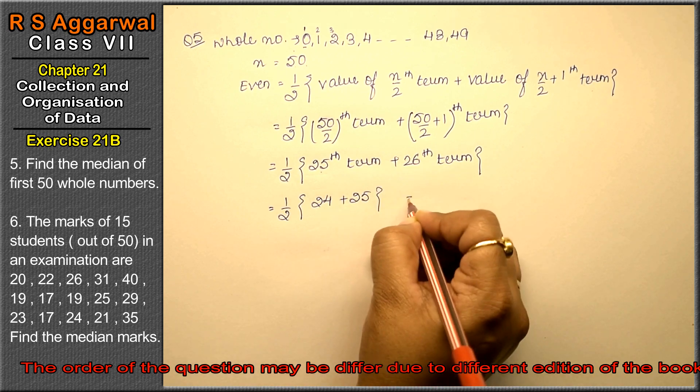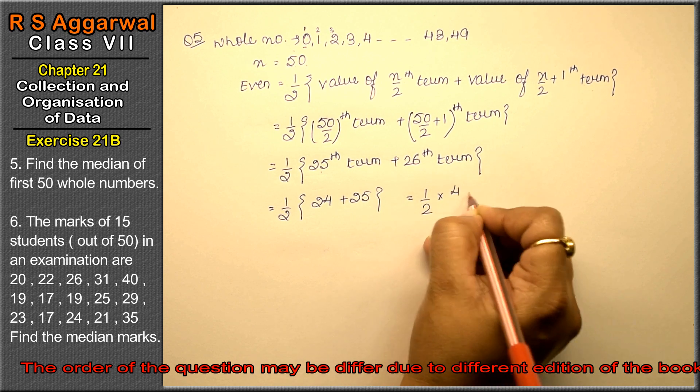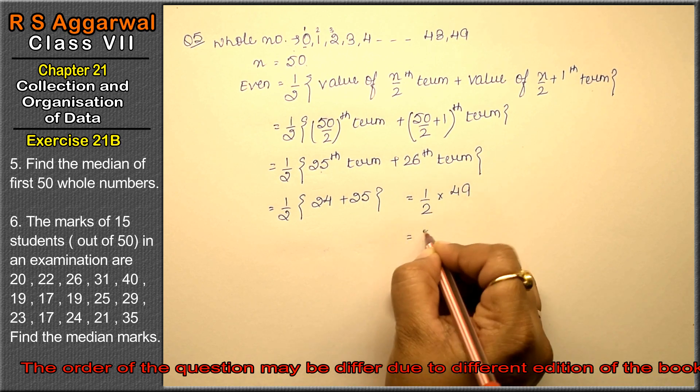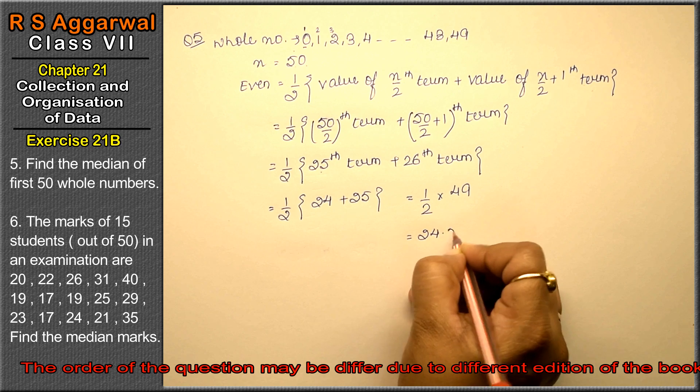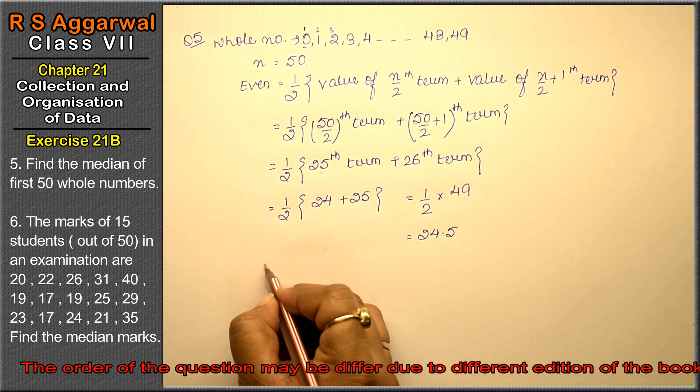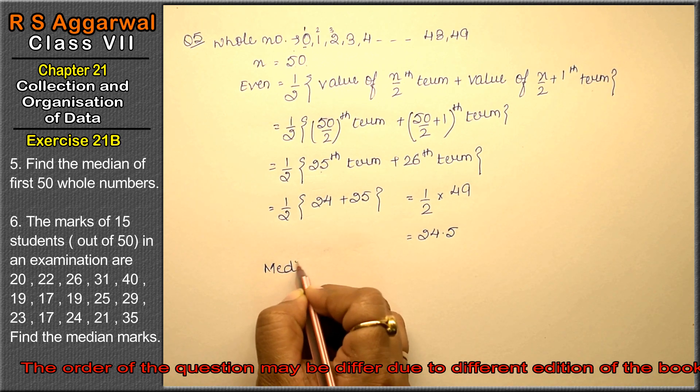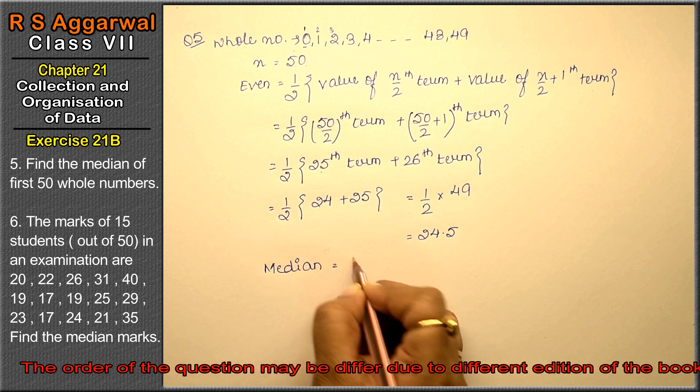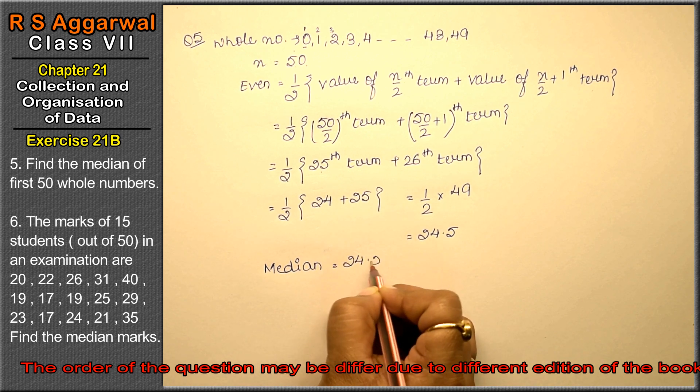Right, friends? So if we add these two, we get 49. Divide and we get 24.5. So the median equals to 24.5, that is the answer.